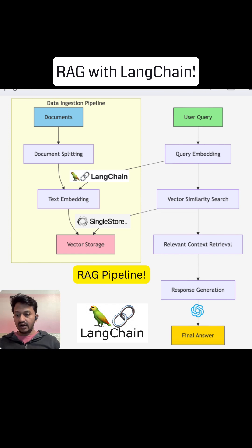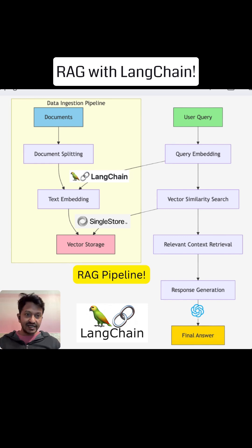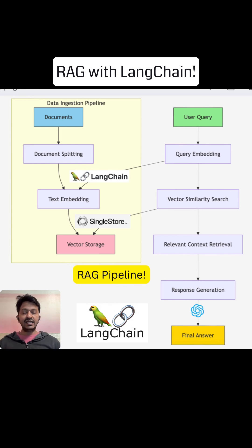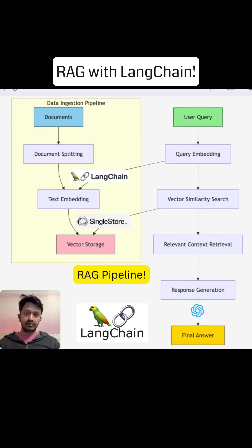To understand what RAG is — we all know that LLMs usually hallucinate. They sometimes come up with their own answers, fake answers, because there is no way to verify whether their answers are correct or not. LLMs also have their own limitations: they have a knowledge cutoff date and they don't have access to enterprise data or custom data of your company.